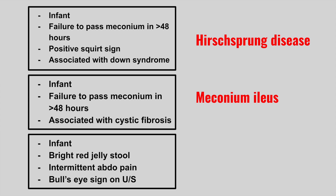The next patient is an infant with bright red currant jelly stool, intermittent abdominal pain, and a bullseye sign on ultrasound — sometimes described as a donut or target sign. This is intussusception, where you get telescoping of one segment of the bowel into another. A Meckel's diverticulum can predispose children to intussusception.